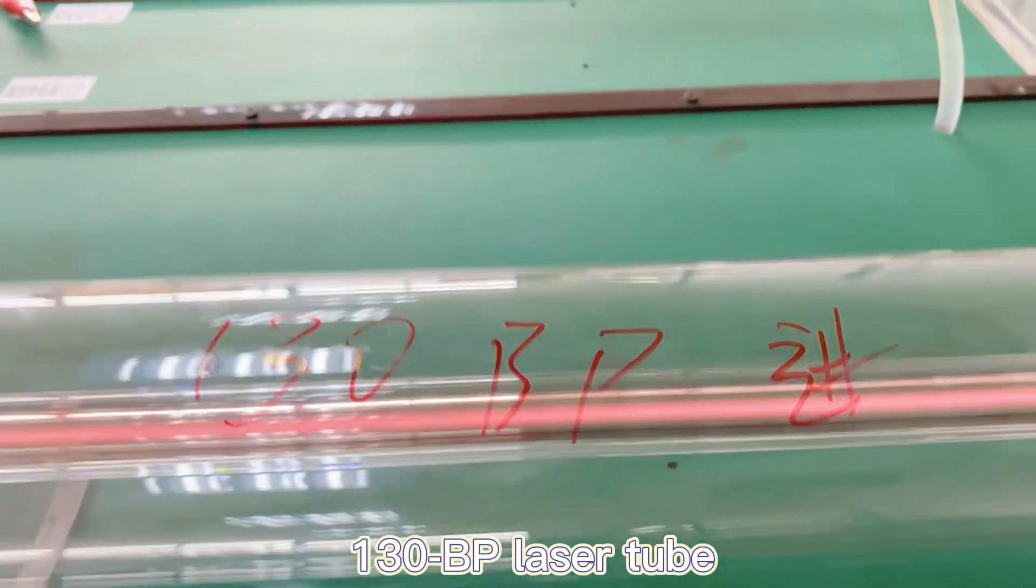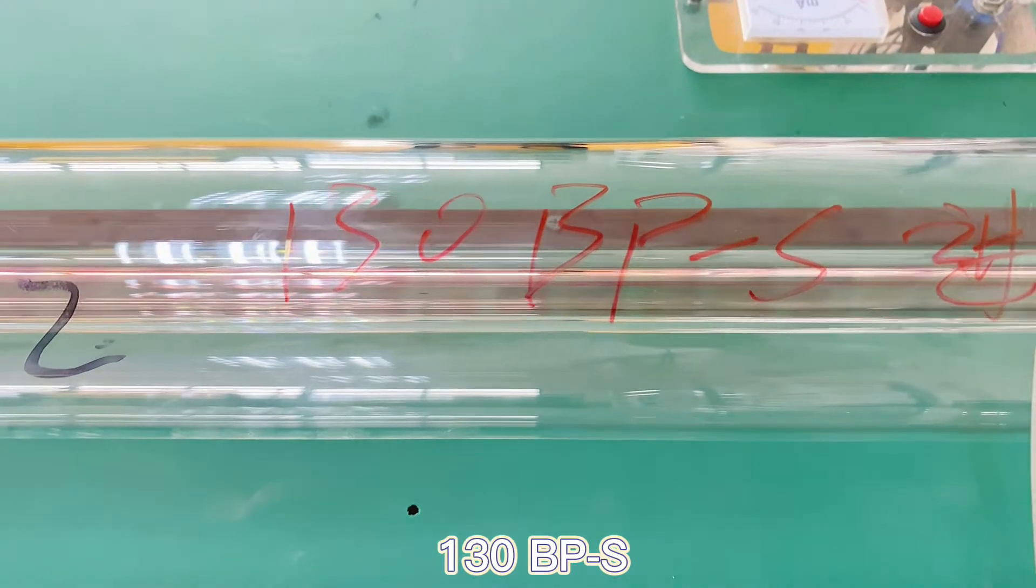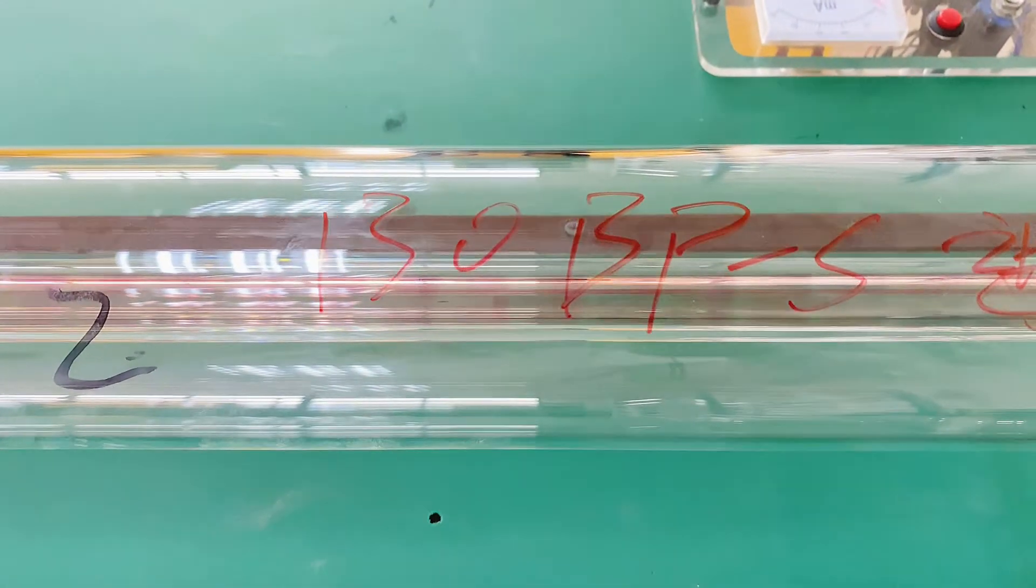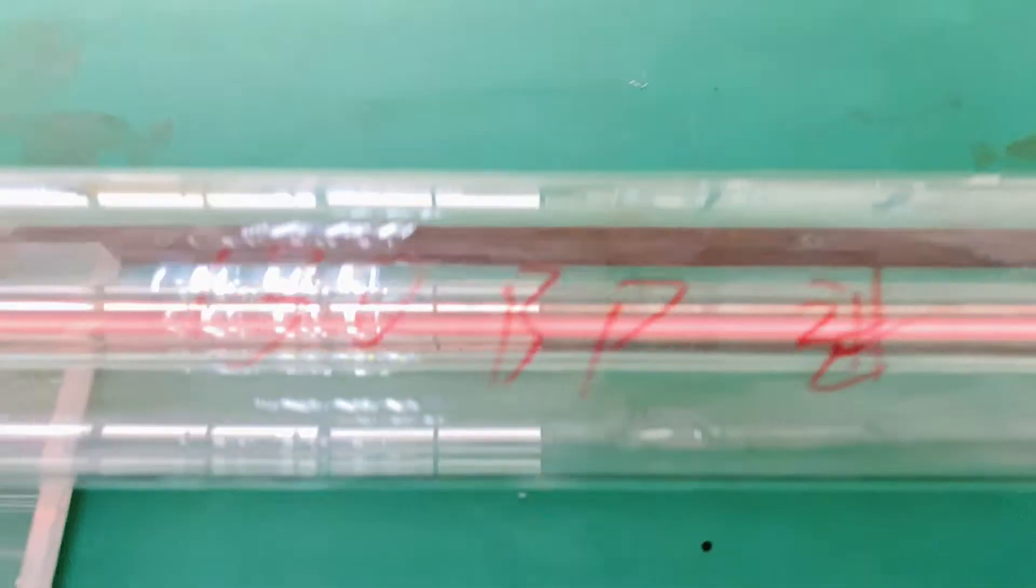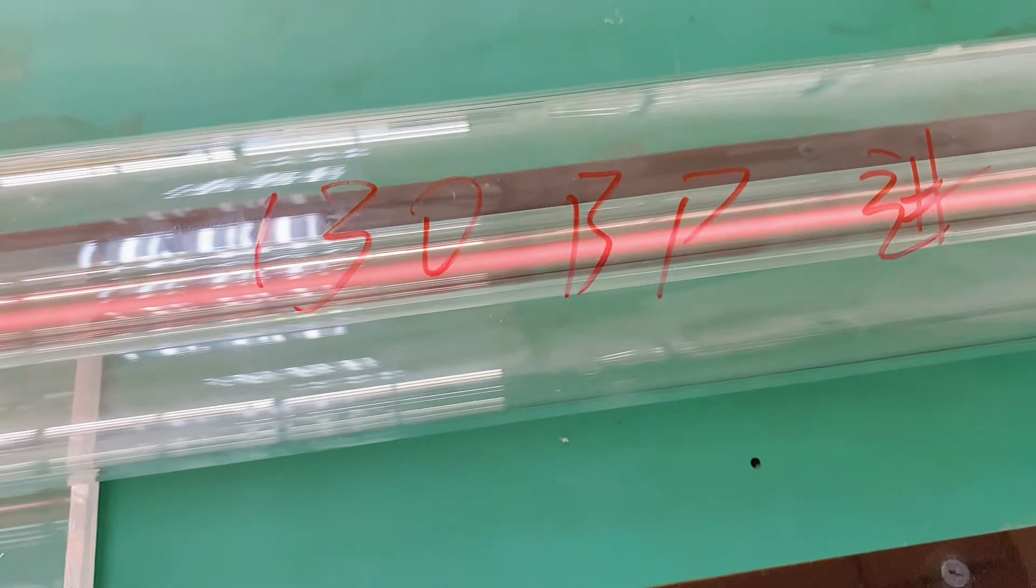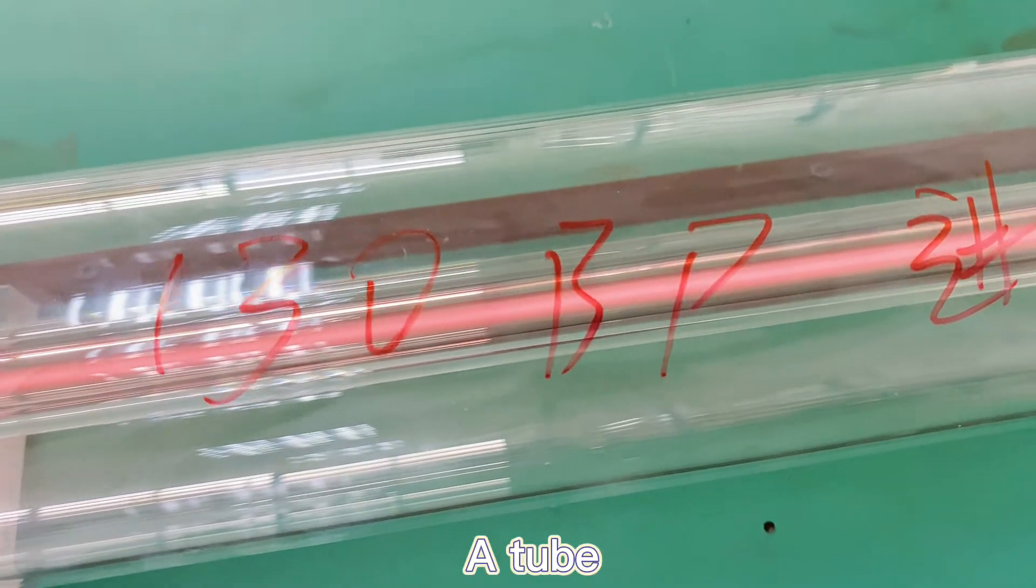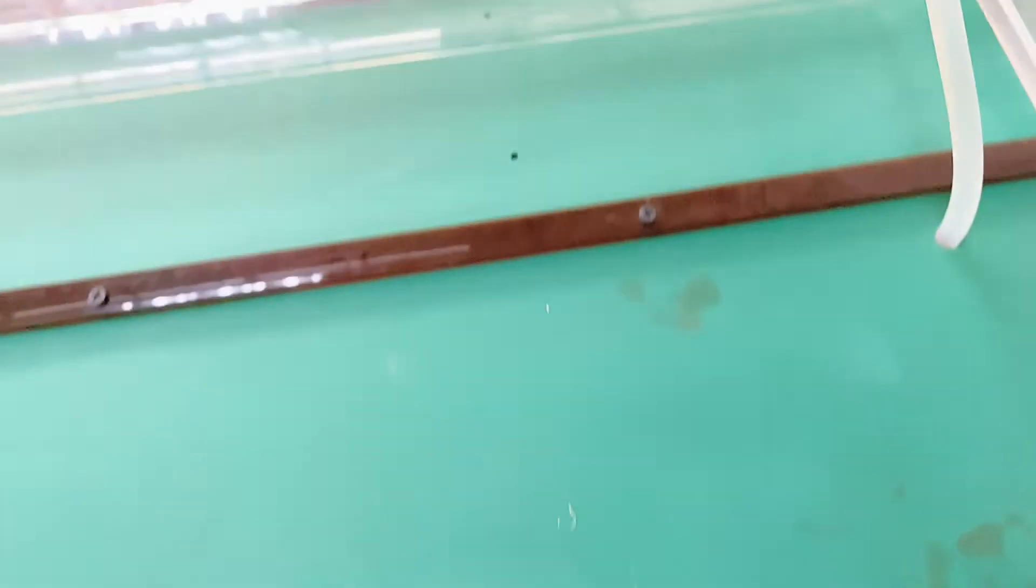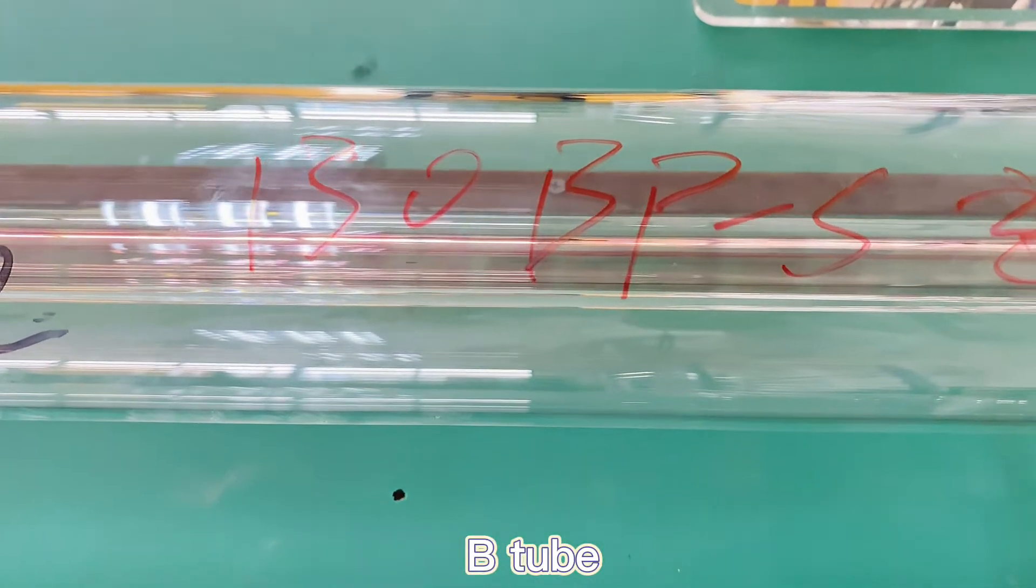You are familiar with this name, BP. Yes, and BPS. This one is 130 BPS, and this one is 130 BPS. This one is called the A-tube. Remember. And this one, BPS, is called the B-tube.